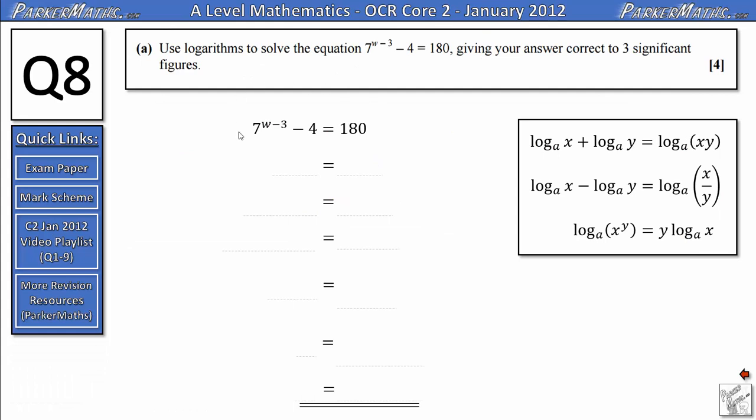So in part A we need to solve this equation to three significant figures. We'll start by adding 4 to both sides, so we get 7^(w-3) = 184. Next we're going to take log of both sides, so we get log(7^(w-3)) = log(184). I've not specified a base here, the main reason is that it doesn't actually matter for this question what the base is, but you can assume when there's no base given that you're working to base 10.